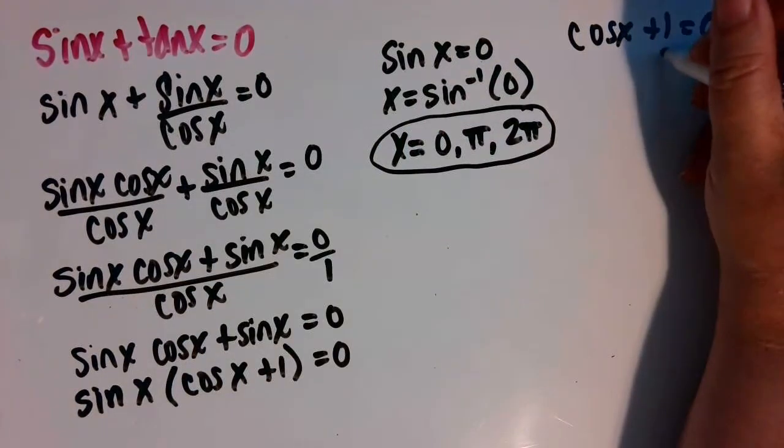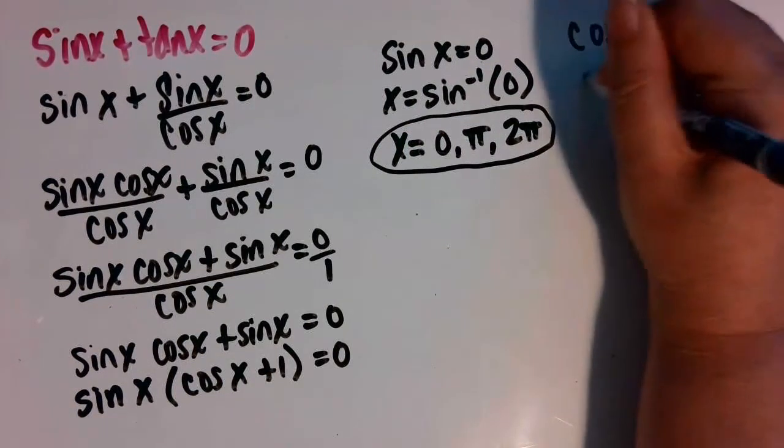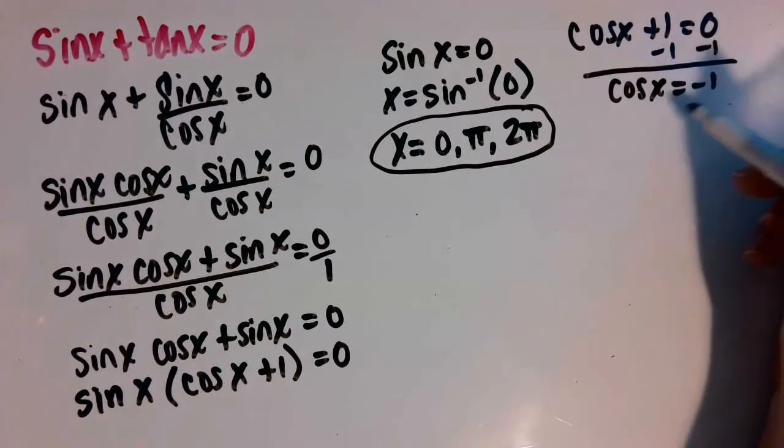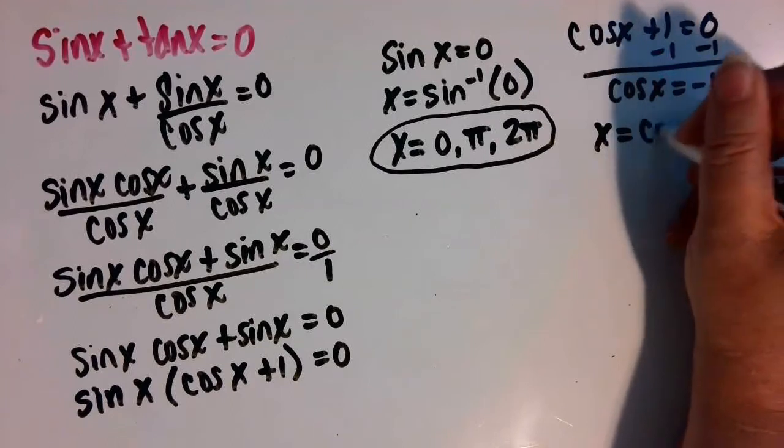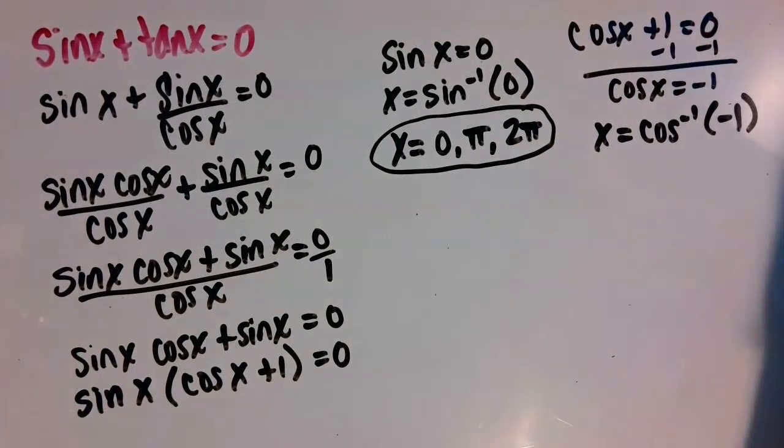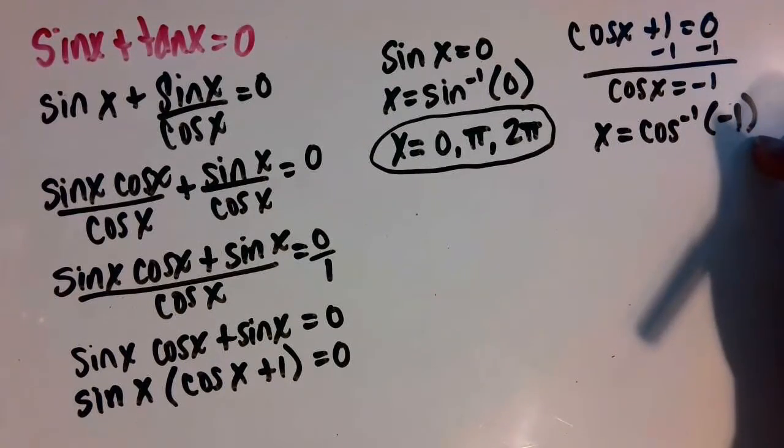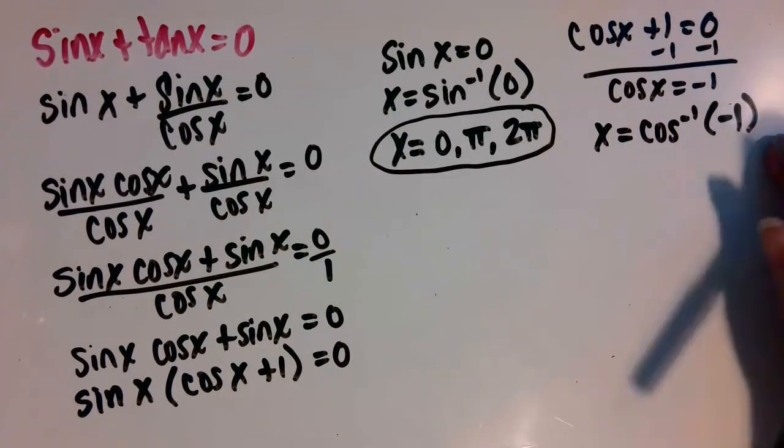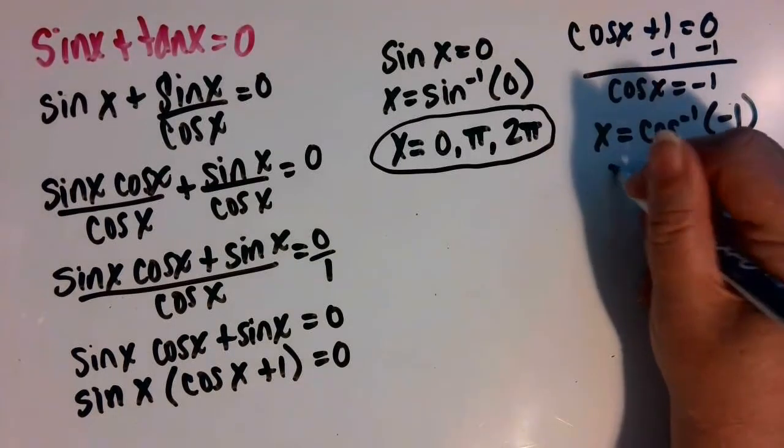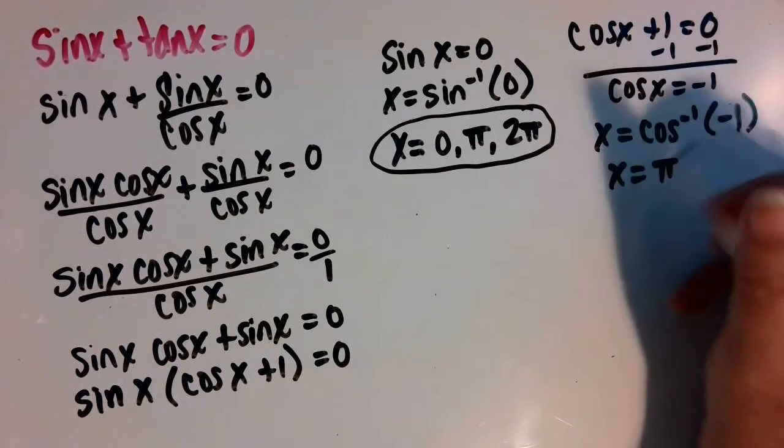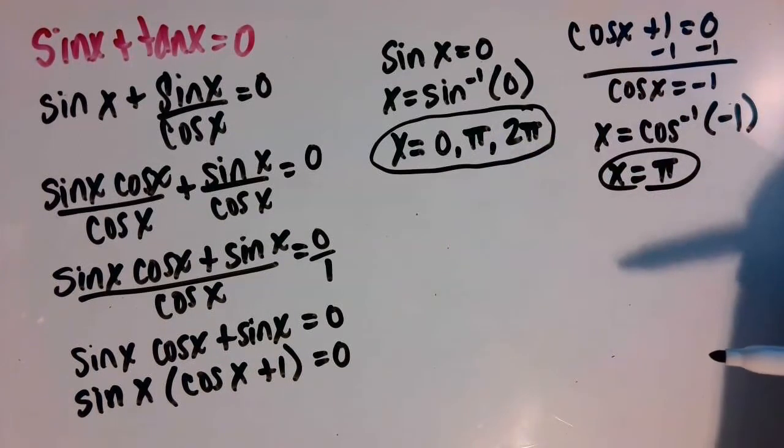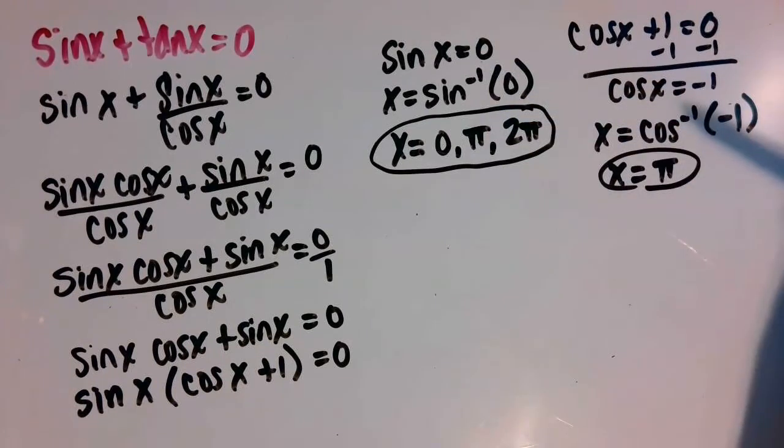Then subtracting one from both sides, we have cosine of x equals negative one. We're going to do the inverse to get x by itself, and that's the arc cosine of negative one. That's asking us where on the unit circle do we have angles that have an x coordinate of negative one, and that occurs at the angle pi. And that's already part of our other solution, so that's just a repeated value.